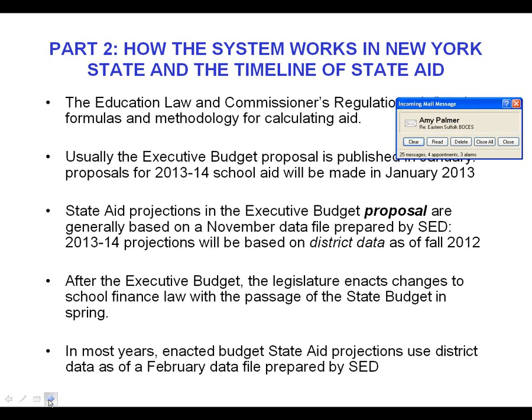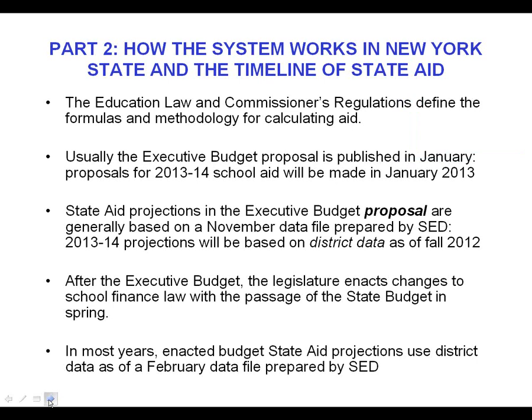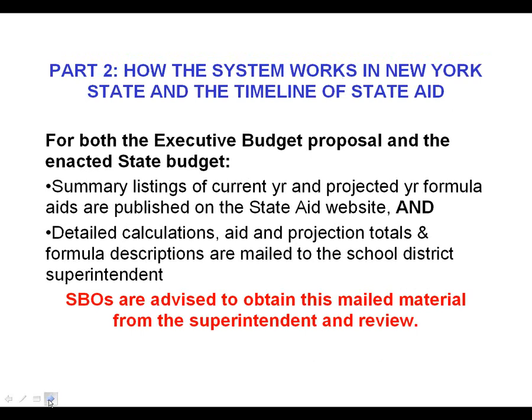The state budget that's enacted in the spring — the data those projections are based on comes from your district data, but this time from a file that's frozen on February 15th. So with the executive, you see numbers in January based on November data, and when the budget passes, you see numbers for projections based on data that was on file with us in February. For both the executive proposal and the enacted budget, we post summary listings of current year and projected year formula aids on our website, and we mail to the superintendent detailed aid and projection totals, formula descriptions, and the backup data for those calculations.